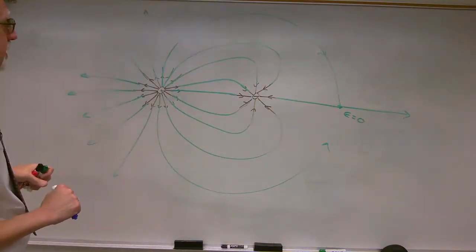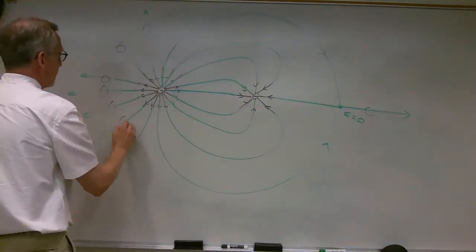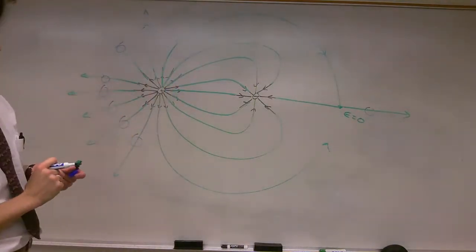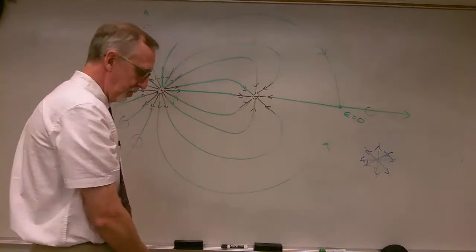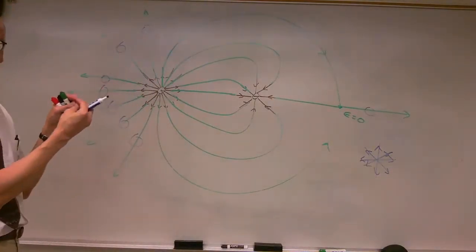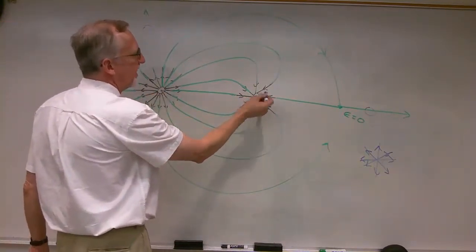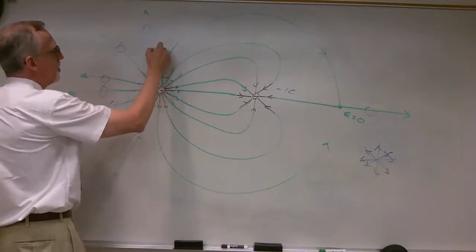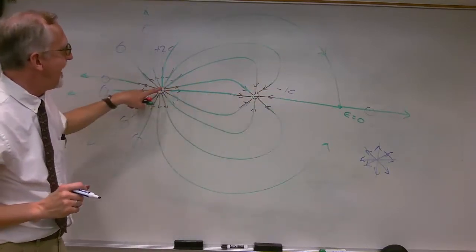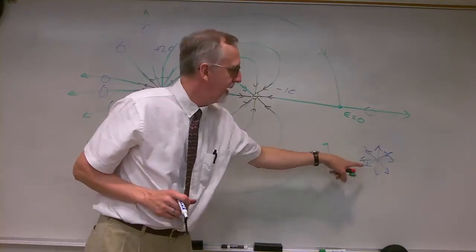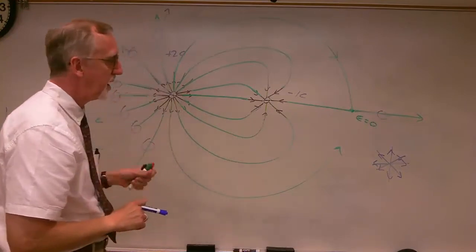What would this look like very far away? Far away, we have eight lines coming out from the charge combination. The two charges would get compressed together and you wouldn't be able to distinguish the two, but we end up with eight lines coming out. We've got a charge of negative one Coulomb and a charge of plus two Coulombs — plus two minus one is plus one. One Coulomb created eight lines, so we've got basically a point charge of one Coulomb creating eight lines — exactly the field of a single positive one-Coulomb charge far away.